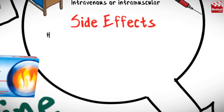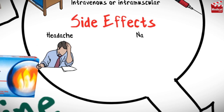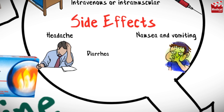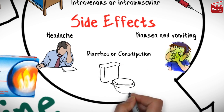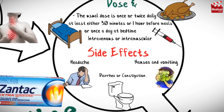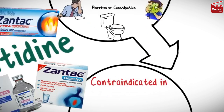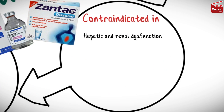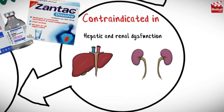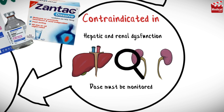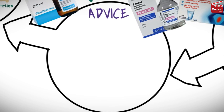Common side effects of ranitidine include headache, nausea and vomiting, and diarrhea or constipation. It is contraindicated in hepatic and renal dysfunction, so the dose must be monitored in cases of kidney or liver disease.